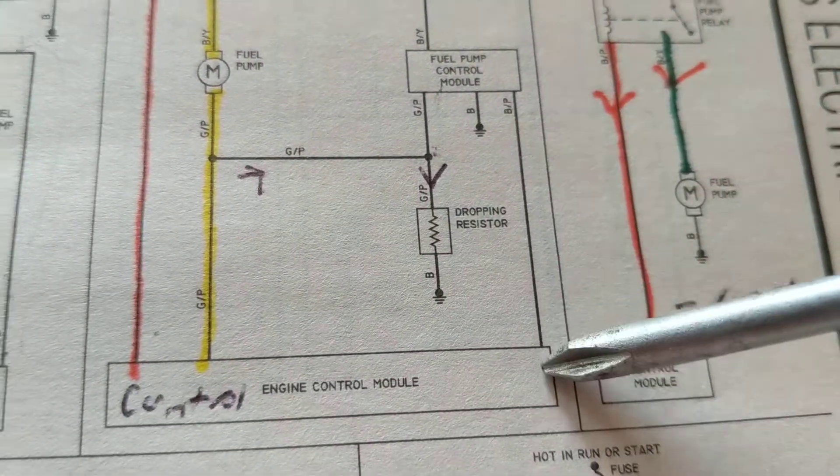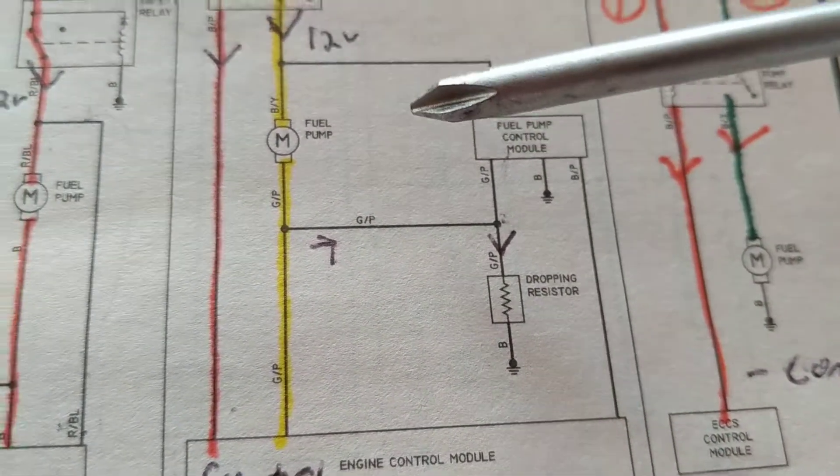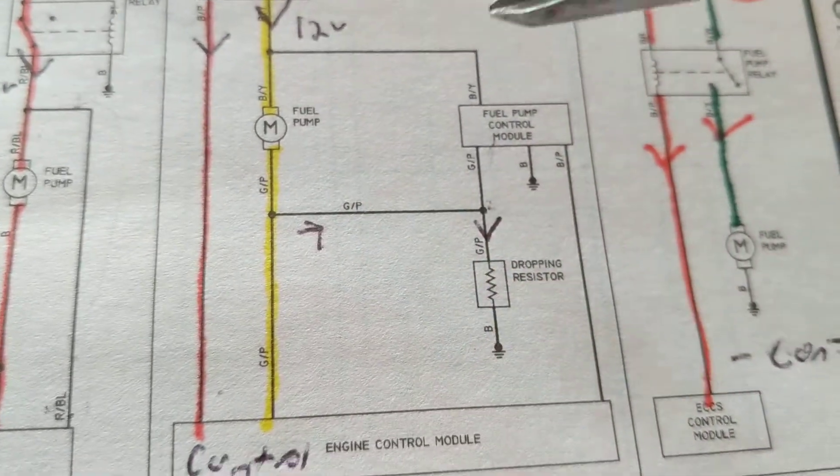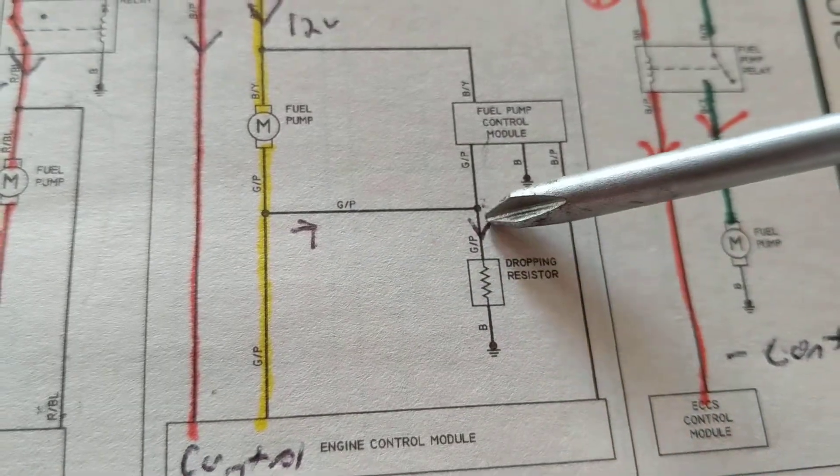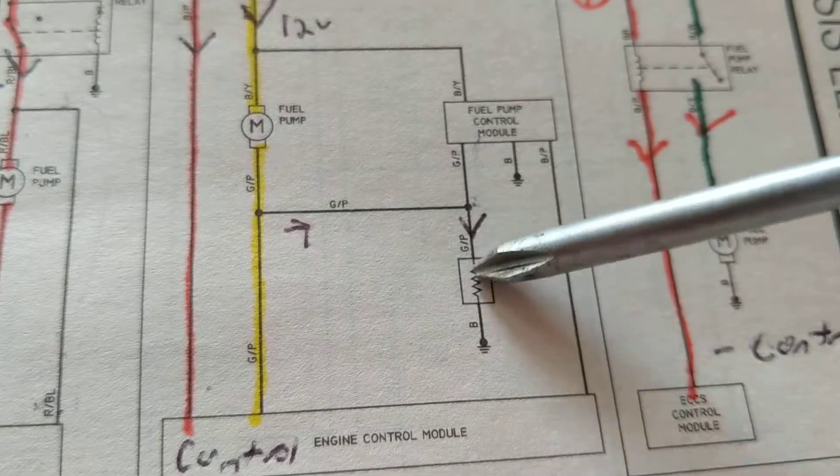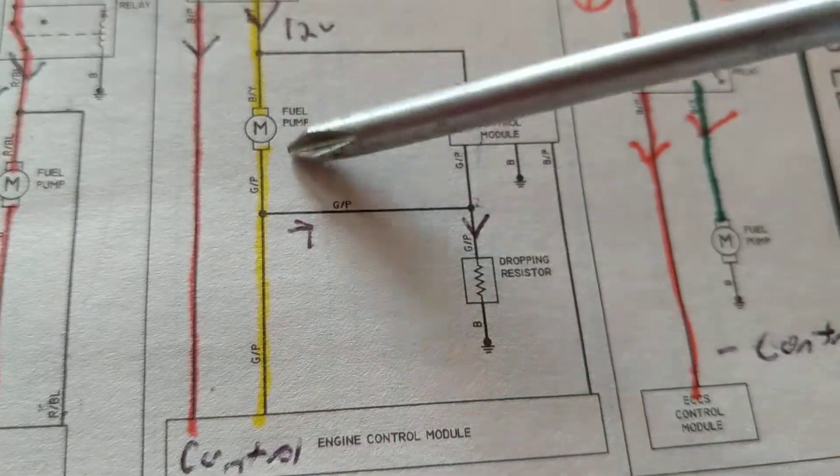That's on the top, 12 volts, and it's connected over here. So this tells us usually the fuel pump gets 12 volts, but when you have a dropping resistor, that means we will have a voltage across this. That means less voltage will be across here.